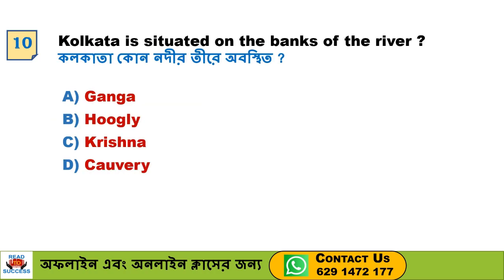Next question: Kolkata is situated on the banks of which river? Option A. Ganga, Option B. Hooghly, Option C. Krishna, Option D. Kaveri. Option B, Hooghly, is the correct answer.